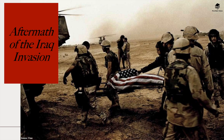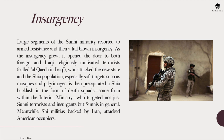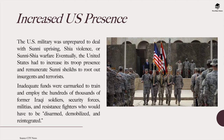The aftermath of the war was significant. Large segments of the Sunni minority in Iraq resorted to armed resistance and then a full-blown insurgency, which opened the door to foreign and Iraqi religiously motivated terrorists — al-Qaeda in Iraq — who attacked the new state and the Shia population, especially soft targets such as mosques and pilgrimages. This precipitated a Shia backlash in the form of death squads targeting not just Sunni terrorists and insurgents but Sunnis in general, while Shia militias backed by Iran attacked American occupiers. The US military was unprepared to deal with the Sunni uprising and sectarian violence, and eventually increased troop presence and paid Sunni sheikhs to reach out to insurgents.